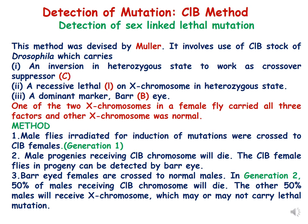In the CLB method, male flies are first irradiated for induction of mutations by a mutagen, and this mutagen has to be tested whether it is lethal or not. After irradiation, the male flies are crossed with CLB females.